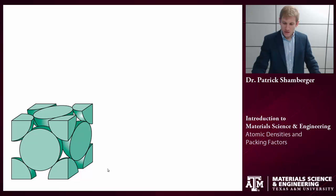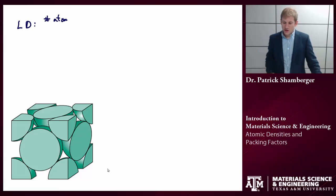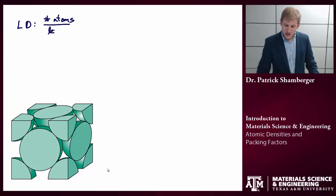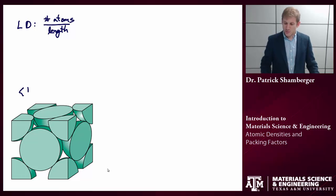A linear density is defined as the number of atoms per unit length. So say I'm interested in a [1,1,0] family of directions.